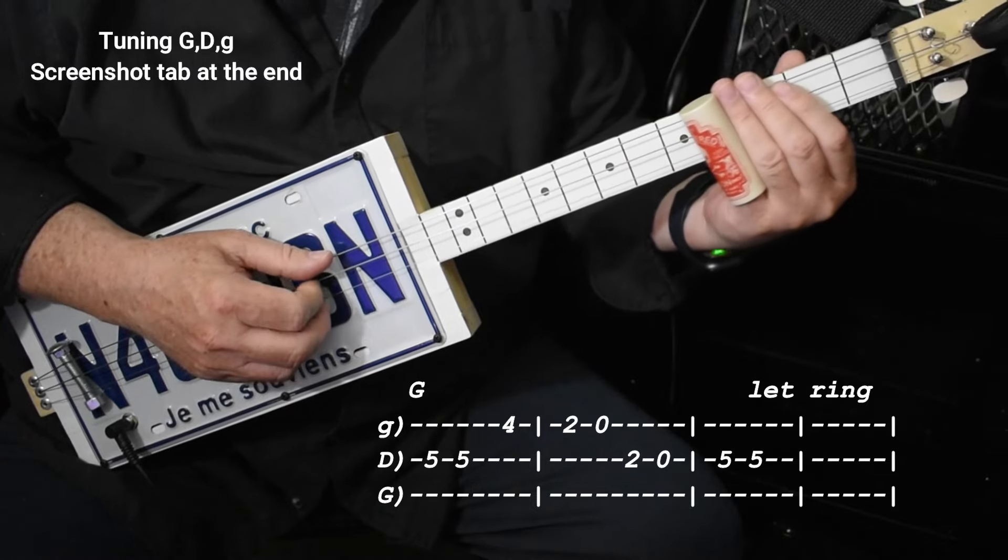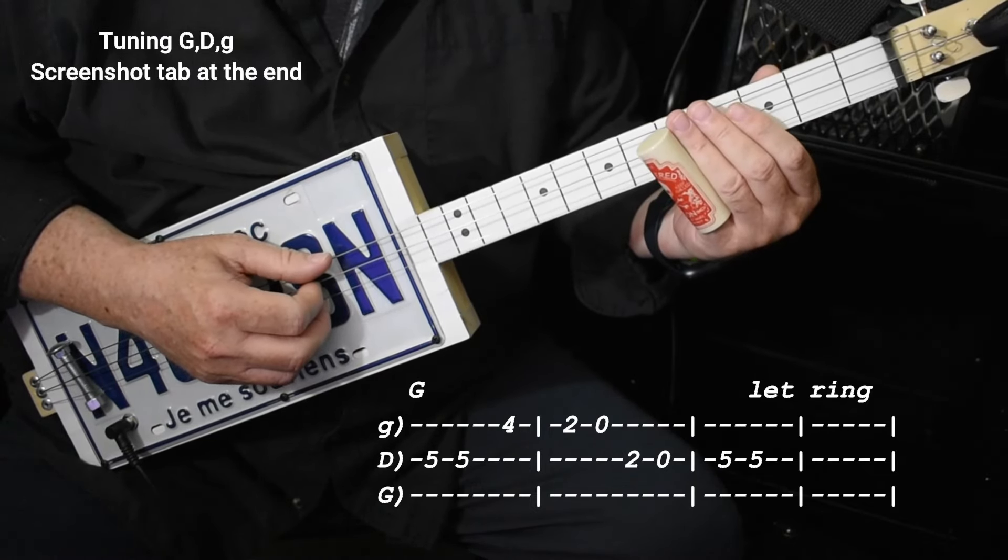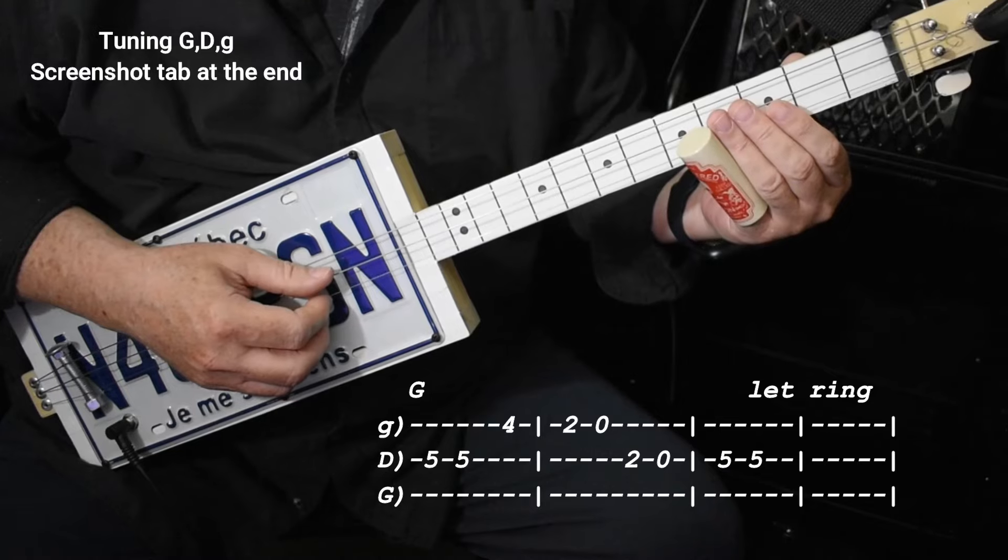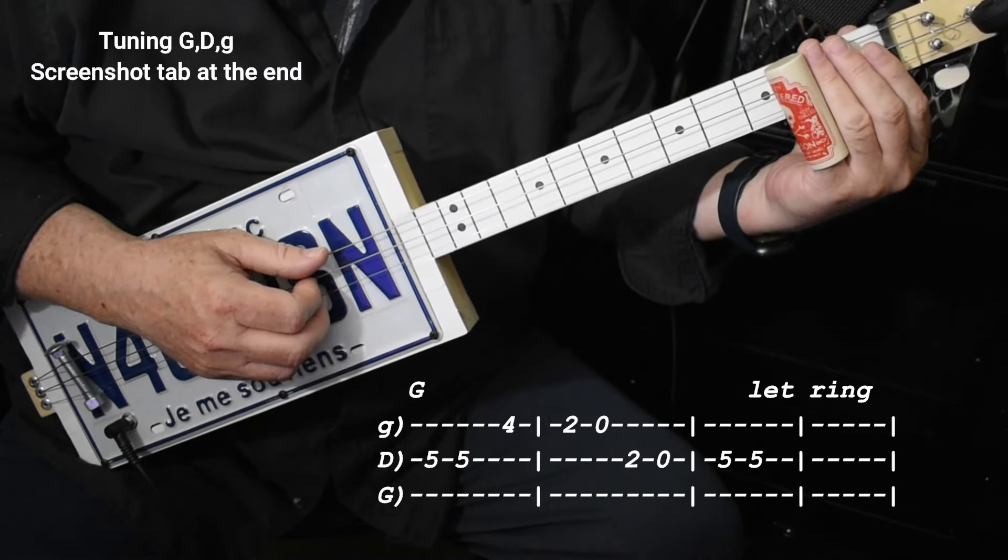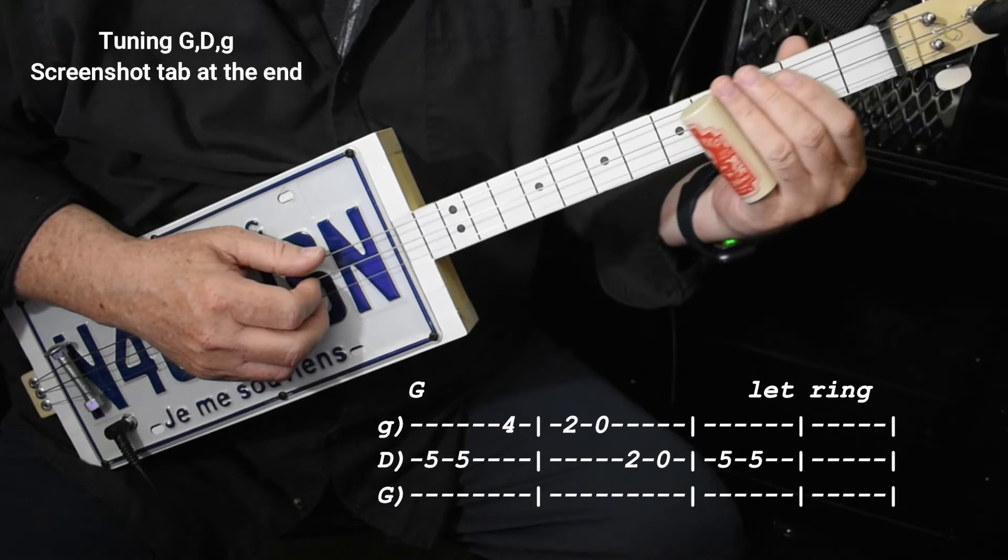So once again: 5-5, 4-2-0, then 2-0 on the middle string, 5-5. I'll play it one more time for you.